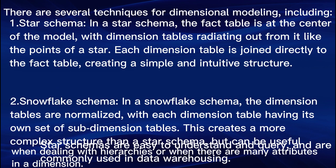There are several techniques for dimensional modeling, including: 1. Star Schema — in a star schema, the fact table is at the center of the model with dimension tables radiating out from it like the points of a star. Each dimension table is joined directly to the fact table, creating a simple and intuitive structure. Star schemas are easy to understand and query, and are commonly used in data warehousing.